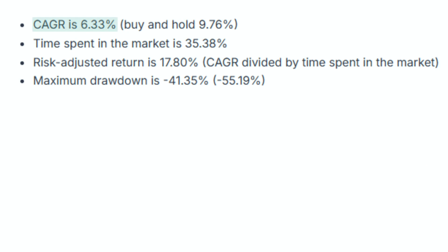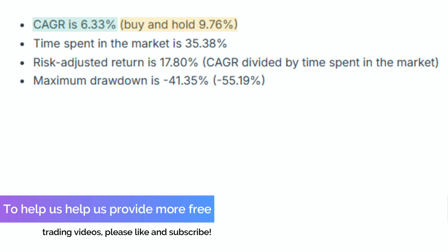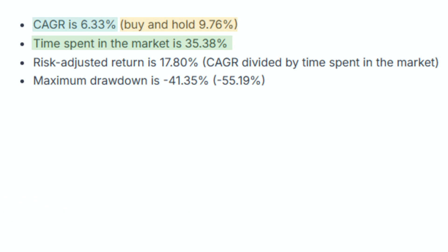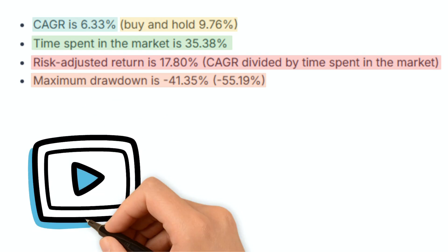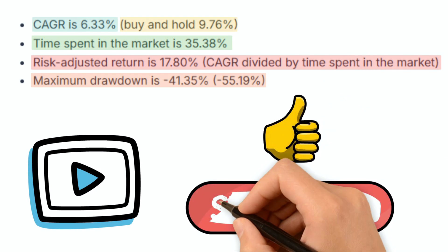The compound annual growth rate (CAGR) is 6.33% compared to 9.76% for buy-and-hold. But the time spent in the market is only 35.38%, and its risk-adjusted return is 17.80%, measured as CAGR divided by time spent in the market. The maximum drawdown is negative 41.35% compared to negative 55.19% for buy-and-hold. By and large, the strategy performed really well compared to buy-and-hold. If you like this video, please like and subscribe.